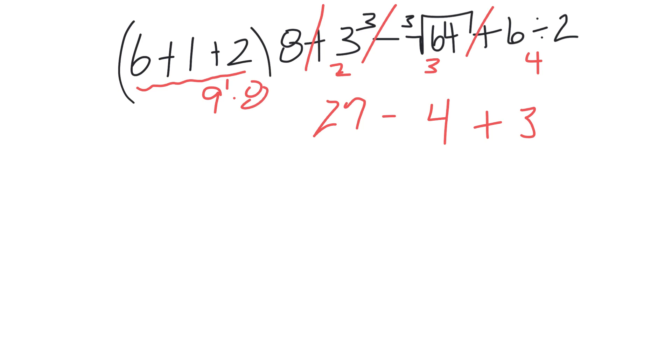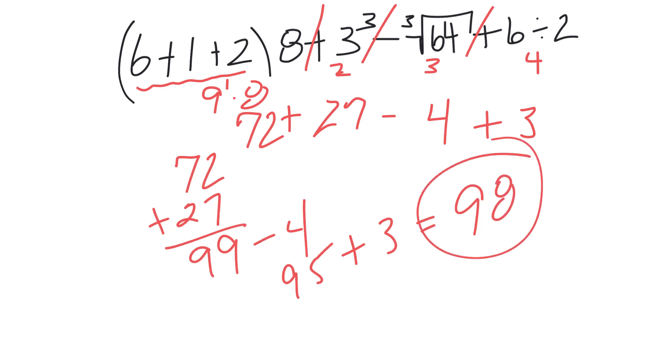So now I've got 72 plus 27 which is 99, minus 4 which is 95, plus 3—that's 98. Hope that helps.